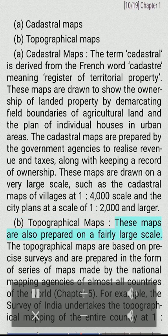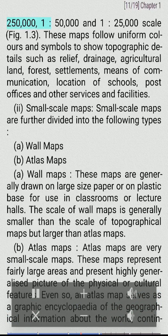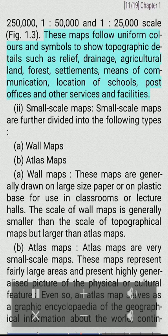Topographical maps. These maps are also prepared on a fairly large scale. The topographical maps are based on precise surveys and are prepared in the form of series of maps made by the national mapping agencies of almost all countries of the world. For example, the Survey of India undertakes the topographical mapping of the entire country at 1:250,000, 1:50,000 and 1:25,000 scale (Fig. 1.3). These maps follow uniform colors and symbols to show topographic details such as relief, drainage, agricultural land, forest, settlements, means of communication, location of schools, post offices and other services and facilities.